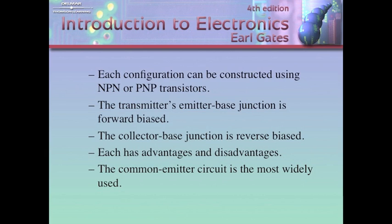The transistor emitter-base junction is going to be forward biased, and the collector-base junction is reverse biased. That's how we turn the transistor on — this should be reviewed, this is nothing new. Each configuration has its advantages and disadvantages. The common emitter circuit is the most widely used throughout the industry.